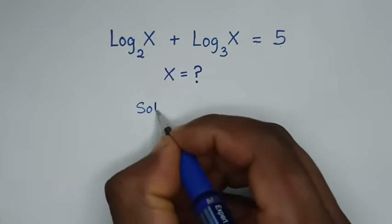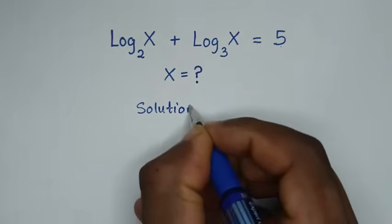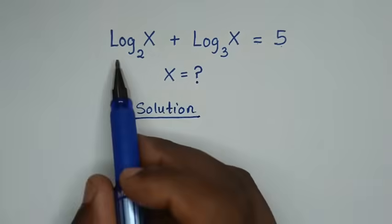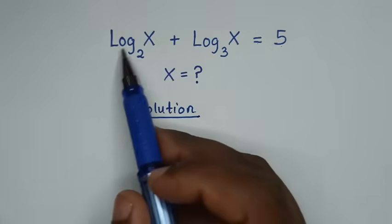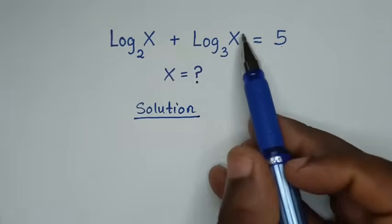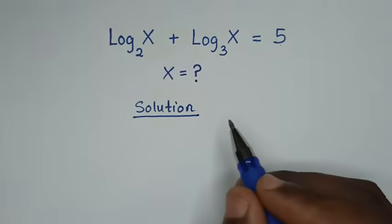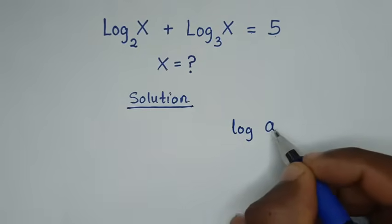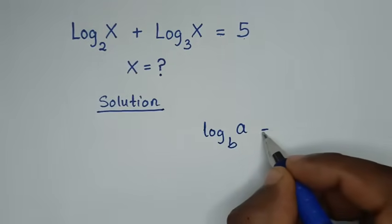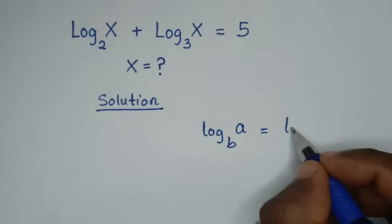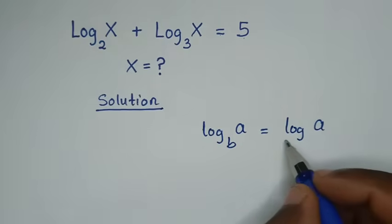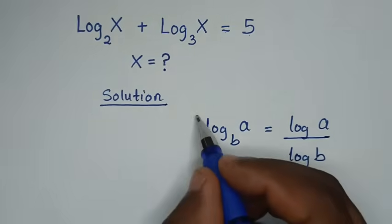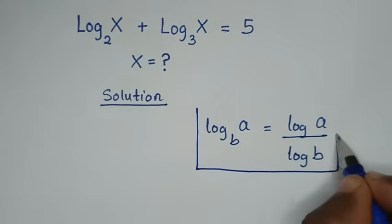Solution. From our problem, log of x base of 2 and log of x base of 3 are in the form of the rule which is log of a base of b, which is equal to log of a over log of b. So we will first apply this rule.